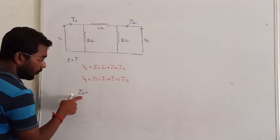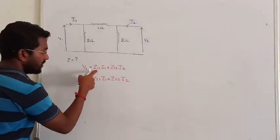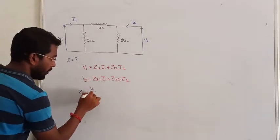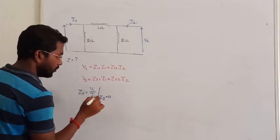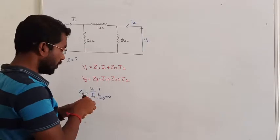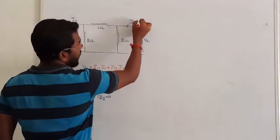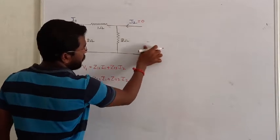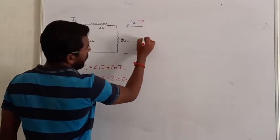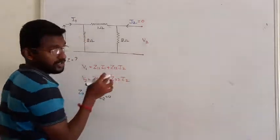So in this question we have to find out first the value of Z11. Z11 is the ratio between V1 and I1 where we are making the value of I2 as 0. Let me take the same network again. If I2 is 0, the secondary is open, so we open the port.